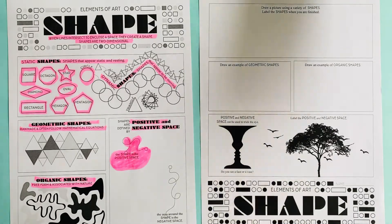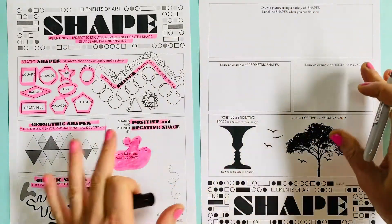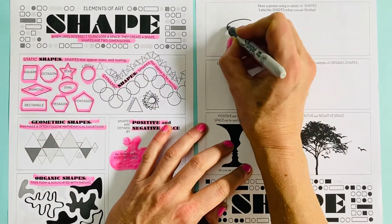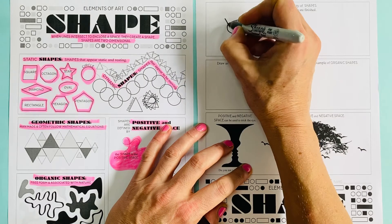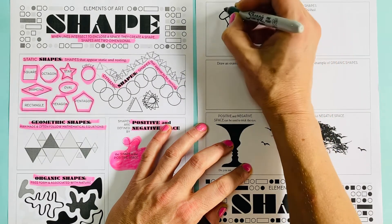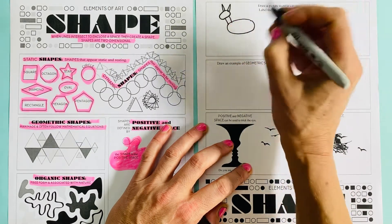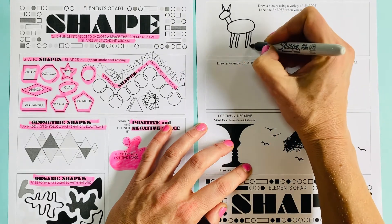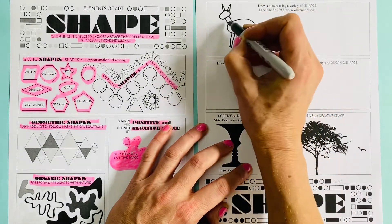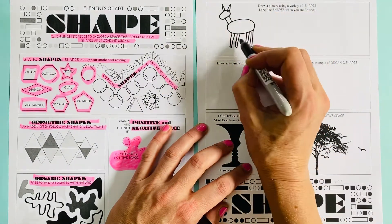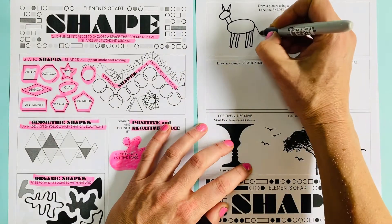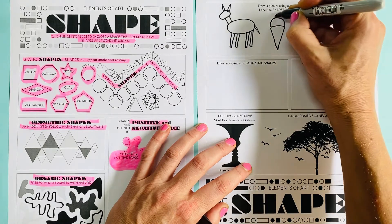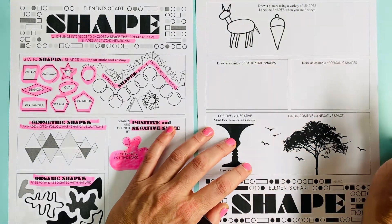Over here you're simply going to draw a picture using a variety of shapes. I'm going to draw a funny animal like this — I've used two ovals, a rectangle, two triangles, and four rectangles. You can also draw an ice cream using a half circle, another half circle, and a triangle.